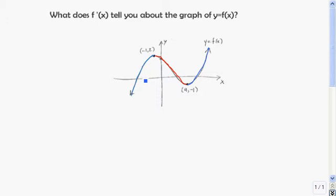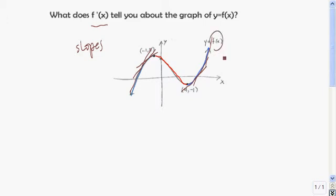On the parts of the graph where f of x is increasing, if we draw the tangent lines, we see that all of their slopes are positive. Again on this side, we draw the tangent lines to the graph of f where it's increasing — their slopes are all going to be positive. So since f prime of x tells us about the slopes of f of x, that means that if f prime of x is positive, then f is increasing.